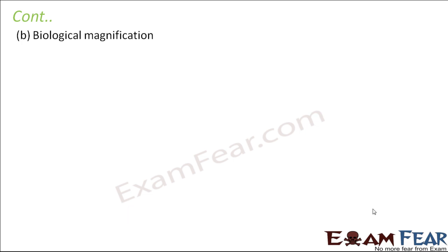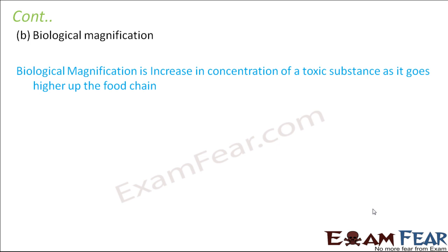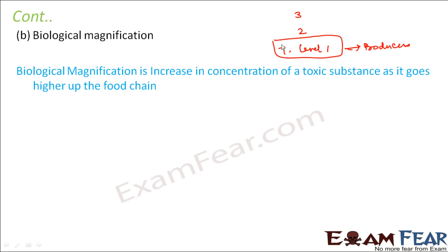Biological magnification means an increase in the concentration of a toxic substance through different life forms. In a food chain we have different trophic levels: trophic level 1 is occupied by producers (green plants), the next by herbivores, then primary carnivores and so on. If a toxic substance enters the producers, its concentration magnifies at each step and increases as we go higher in the trophic levels.